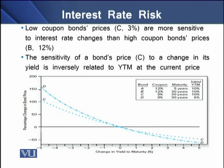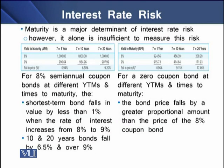The sensitivity of a bond price to a change in its yield is inversely related to YTM at the current price, as seen with bond C. There is also the phenomenon that maturity is a major determinant of interest rate risk, but it alone is insufficient to measure this risk. To understand this, we have an example using 8% semiannual coupon bonds at different YTMs and times to maturity.